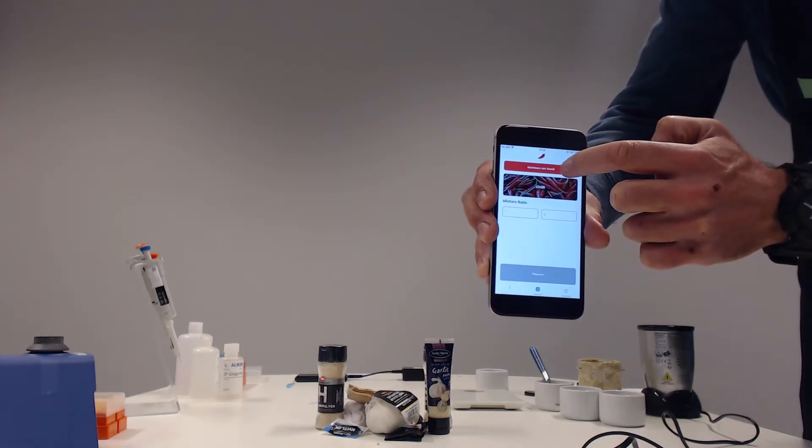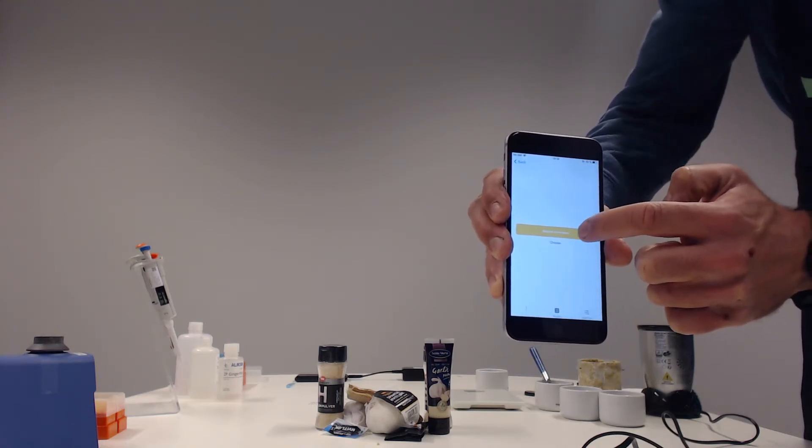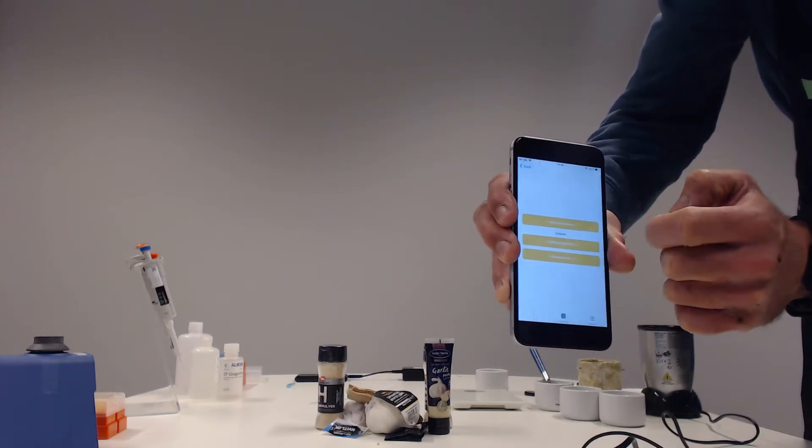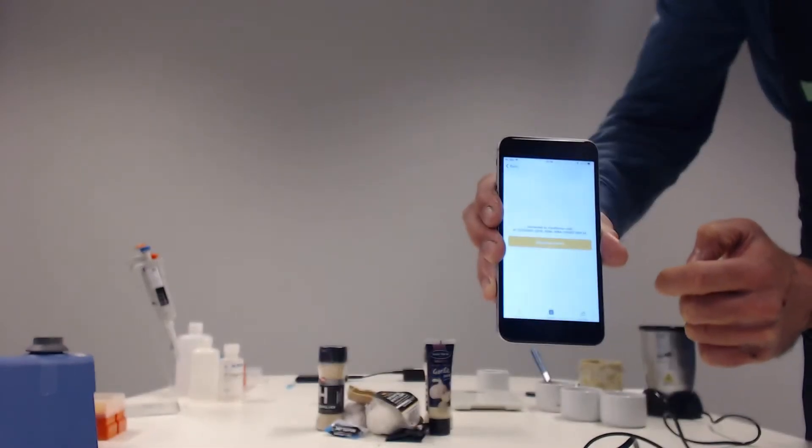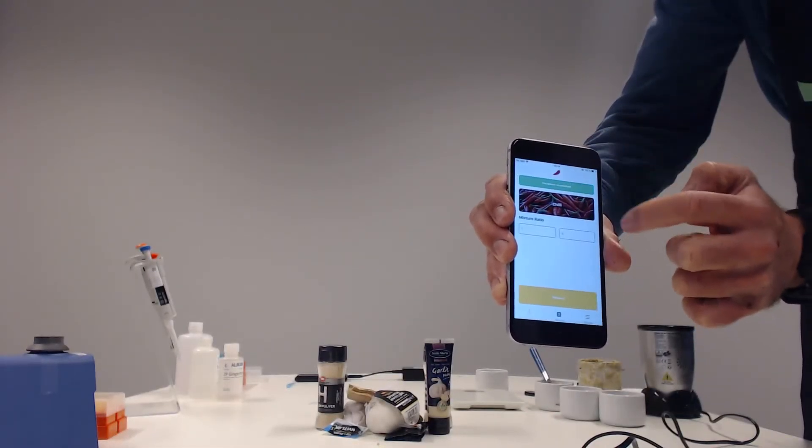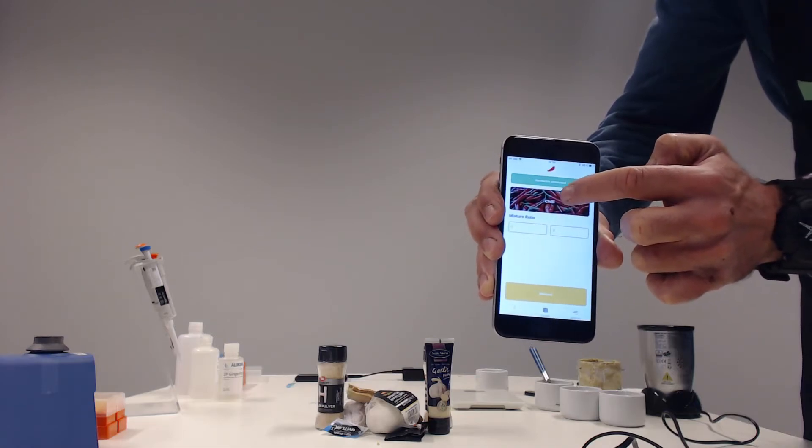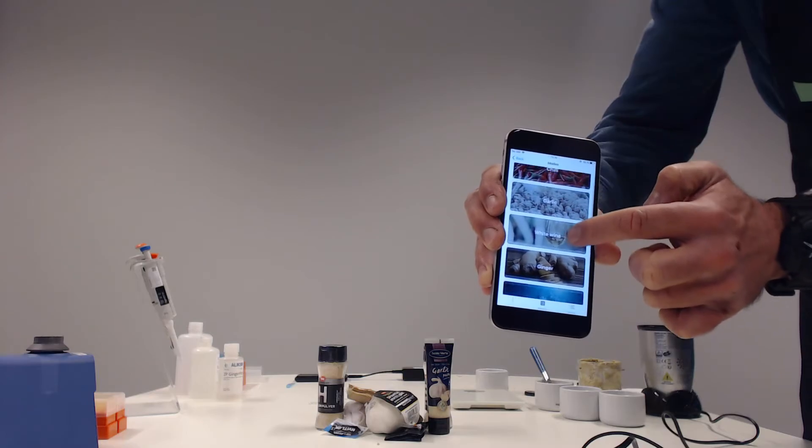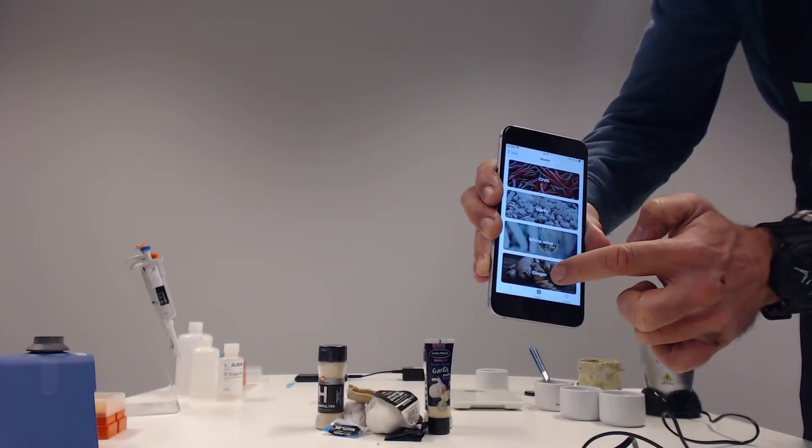So I will open the app. Hardware not found is what it says, so I will have to rescan and find my device, which is there. So I connected to it. I go back. By default it comes on the Chile menu, but I will press it to come to the main menu where I can choose the different analytes. In this case, I'm going to press Ginger.